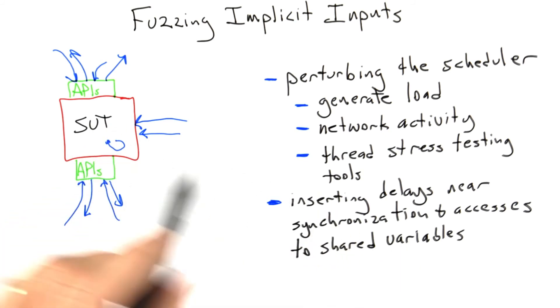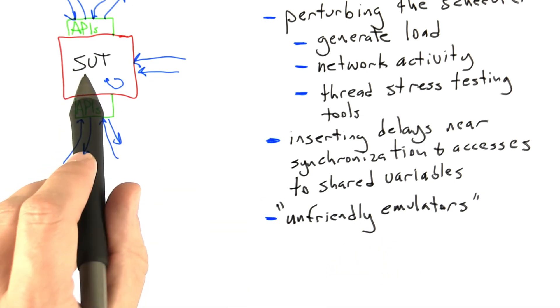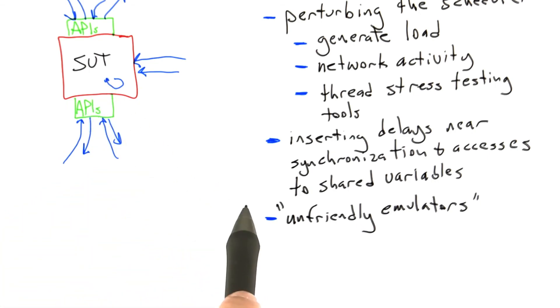A final thing you can try is what I'm going to call unfriendly emulators—I'm kind of just making up that name. What these are is a kind of special virtual machine or other runtime specially designed to stress test your application by doing things like invalidating cache lines, invoking thread schedules in odd ways, and other things. There are some of these generally available, and if one fits the needs of your software under test, you should definitely use it.